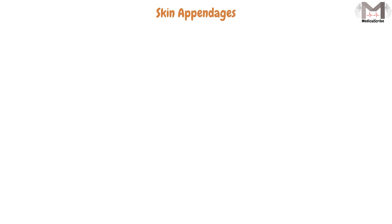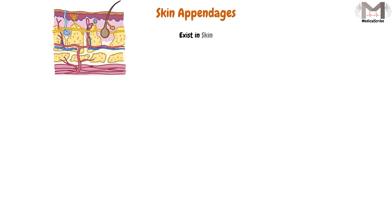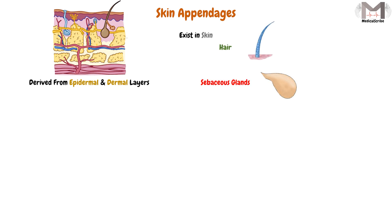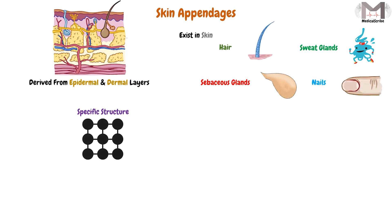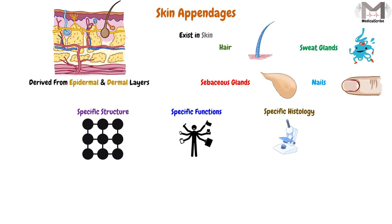The skin appendages are structures that exist in the skin, which are derived from the epidermal and dermal layers. The skin appendages include many structures: the hair, the sebaceous glands, the sweat glands, and the nails. For every element, there is a specific structure, specific functions, and specific histology.